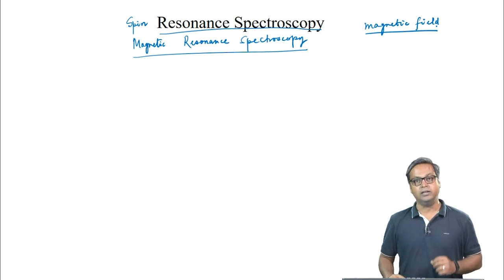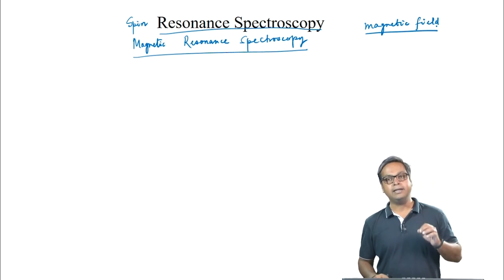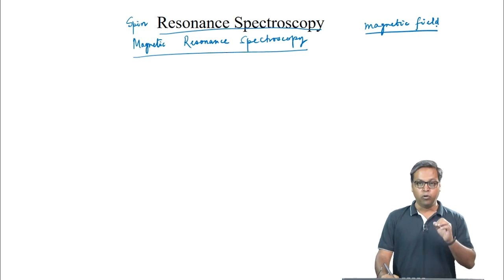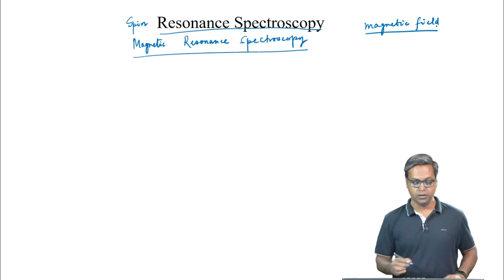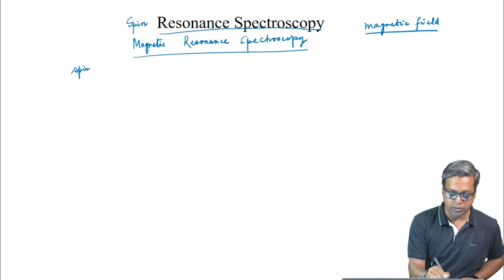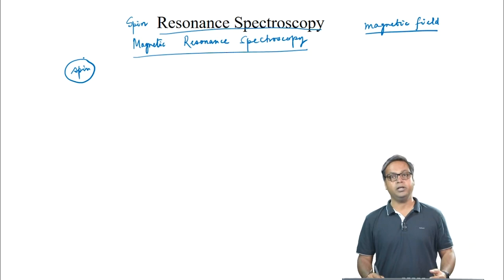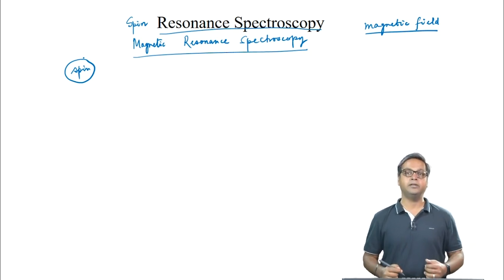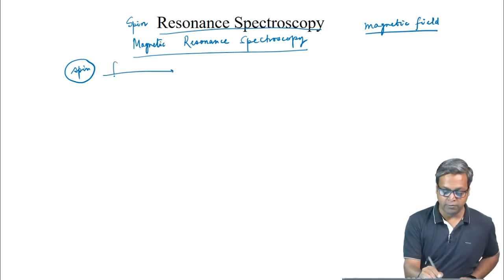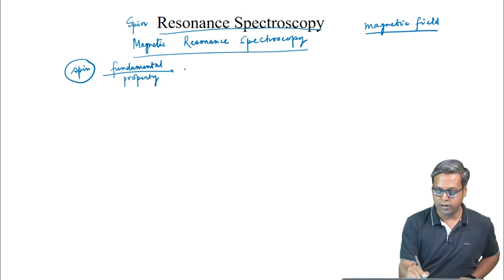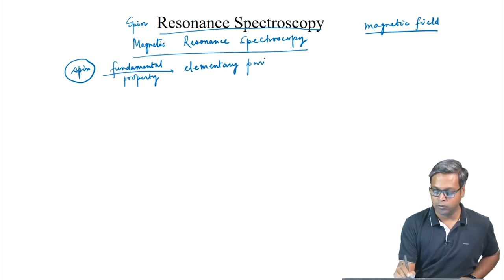The magnetic field is used to provide the energy level separations probed by the radiation. Both these spectroscopies involve spin. Spin is a fundamental property of an elementary particle — it is a fundamental property of any elementary particle.